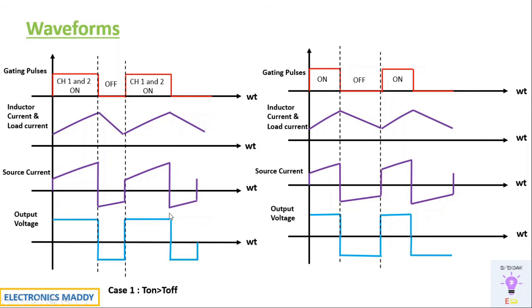For output voltage when Ton is less than Toff: the negative voltage will be greater than the positive voltage. One important inference — when Ton is greater than Toff, the average output voltage is more positive, so the circuit operates mostly in the first quadrant. When Ton is less than Toff, the average output voltage is more negative, so it operates mostly in the fourth quadrant.